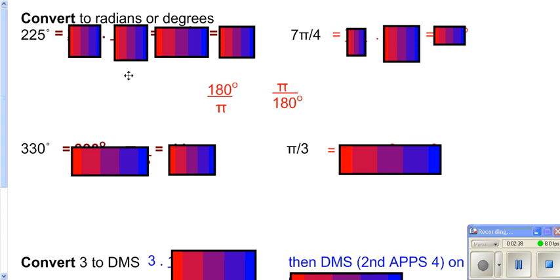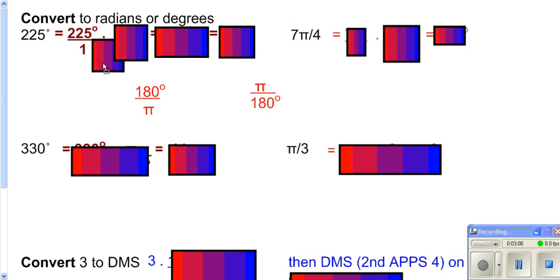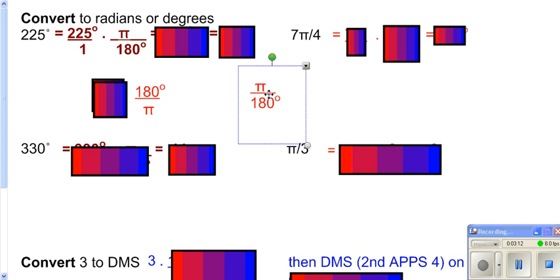So here we need to convert. These are the two factors that we need to multiply by. You may not remember which one is which. If I need to take my 180 and multiply it by this, would my degrees drop? I need to have degrees in the top and degrees in the bottom. In this case it won't. So that is why I want to take my 225 and multiply it by the other one, the π over 180.